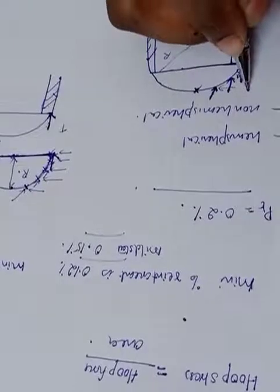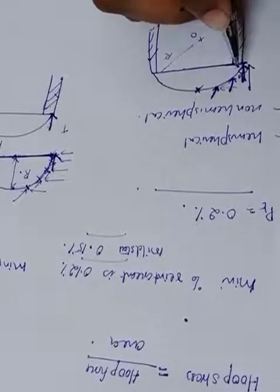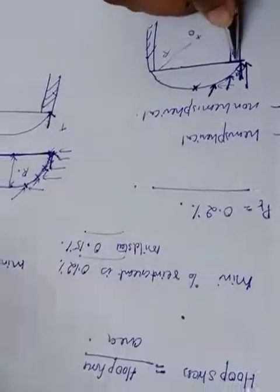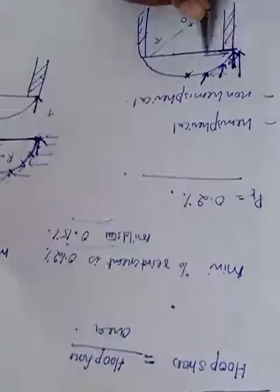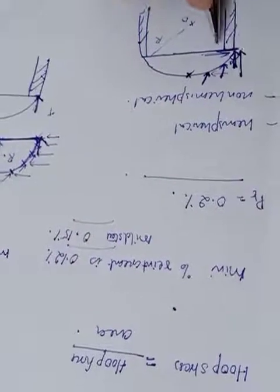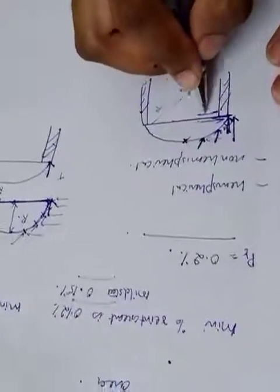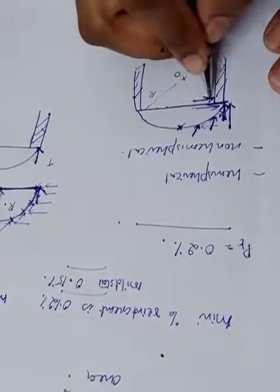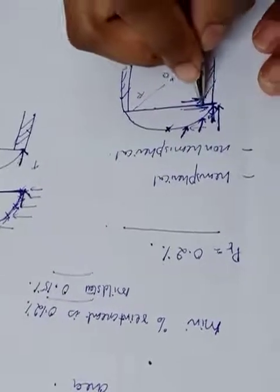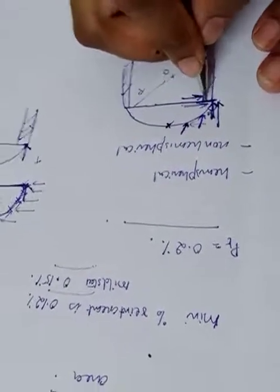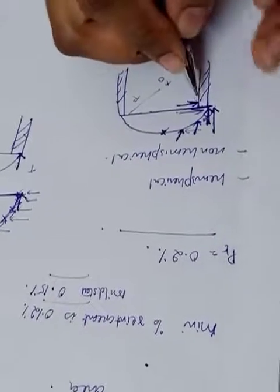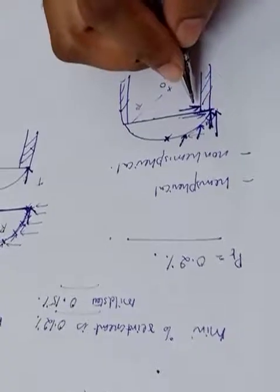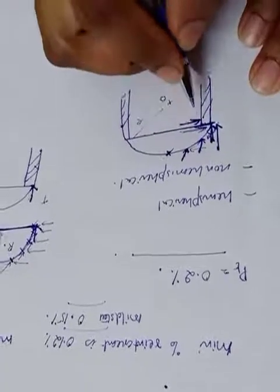It will have forces in both x and y directions, so we resolve it into these components. Because of this horizontal force, there is a thrust acting on the support outwards. This will cause the support to burst off.